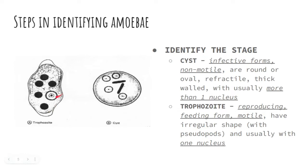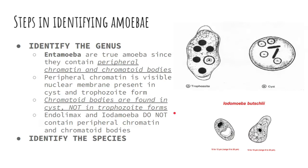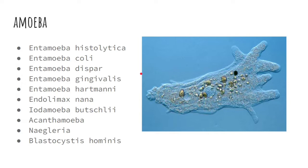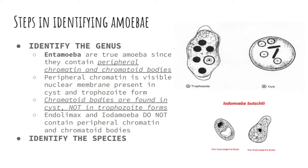That is the main differentiation on how you will identify the amoeba. First, identify the stage. The second step is to identify the genus. Entamoeba, or true amoeba, is the genus that contains peripheral chromatin and chromatoid bodies — that is why they are called true amoebas.